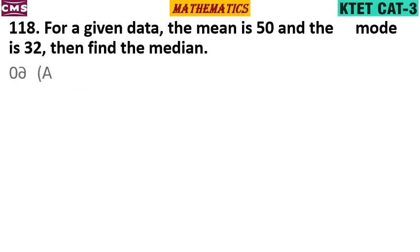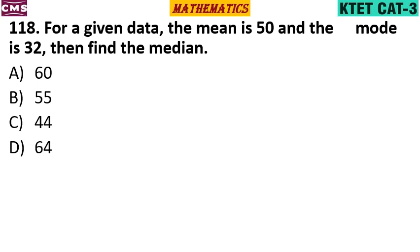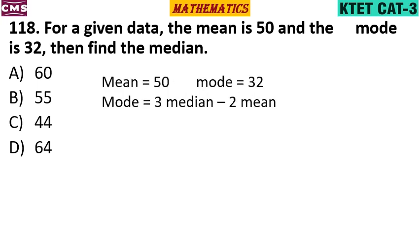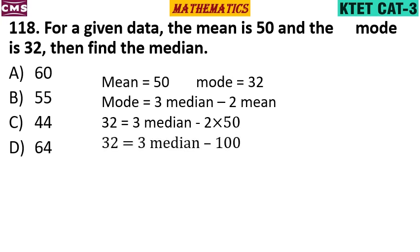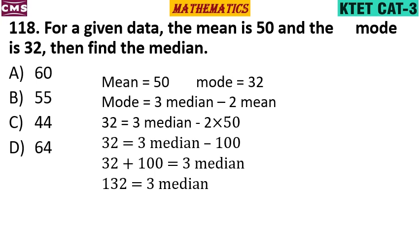Next question: For a given data, the mean is 50 and the mode is 32. Find the median. Using Mode = 3 × Median minus 2 × Mean: 32 = 3 × Median minus 100. So 3 × Median = 132, and Median = 44. Option C.